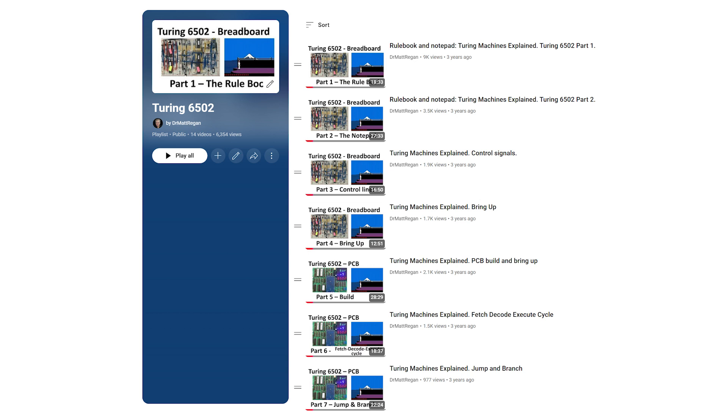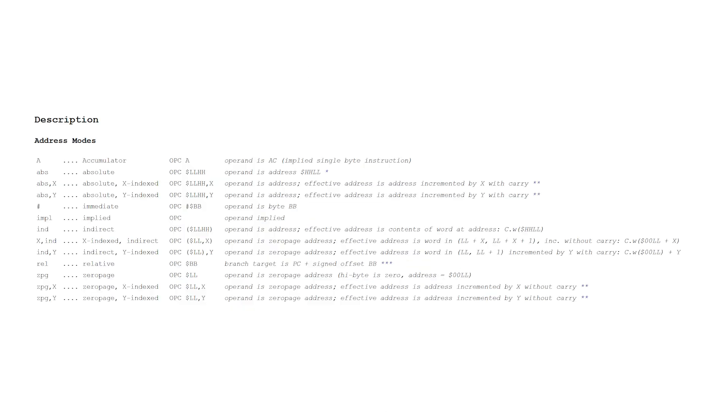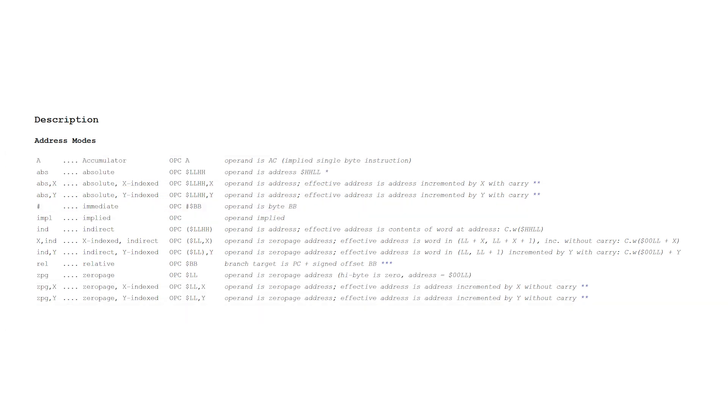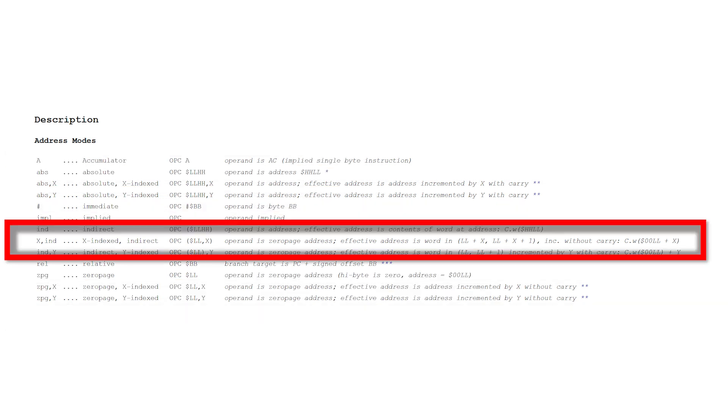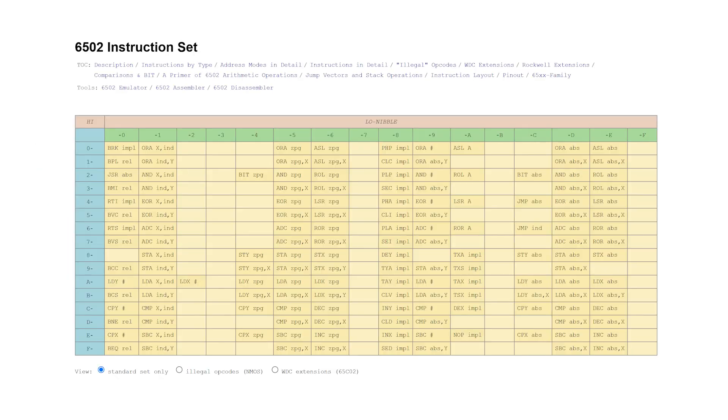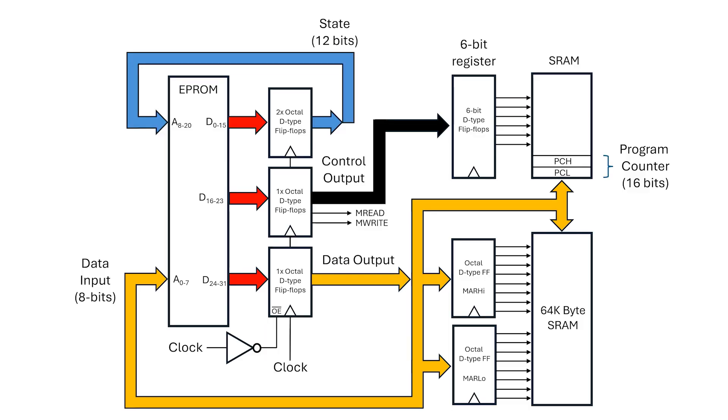In that series, I walk through the fetch, decode and execute cycle, as well as jumps and branches. We go step by step through the 6502 addressing modes: immediate, absolute, zero page, indexed and even the tricky ones, like x indexed indirect and indirect y indexed. After that we cover logical operations, arithmetic operations and stack operations. Everything needed to make a full 6502 emulator work inside this system.